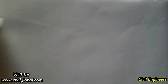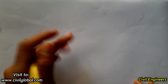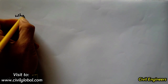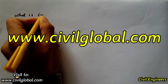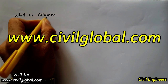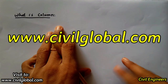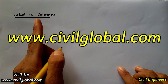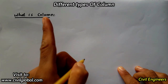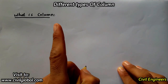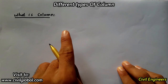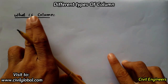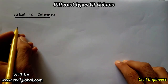First of all I will tell you what is a column. In civil engineering, a column is a vertical member which carries the compressive load — that is called a column. A column transfers the load from the slab and beams to the foundation or footing. This is the simple definition of column.